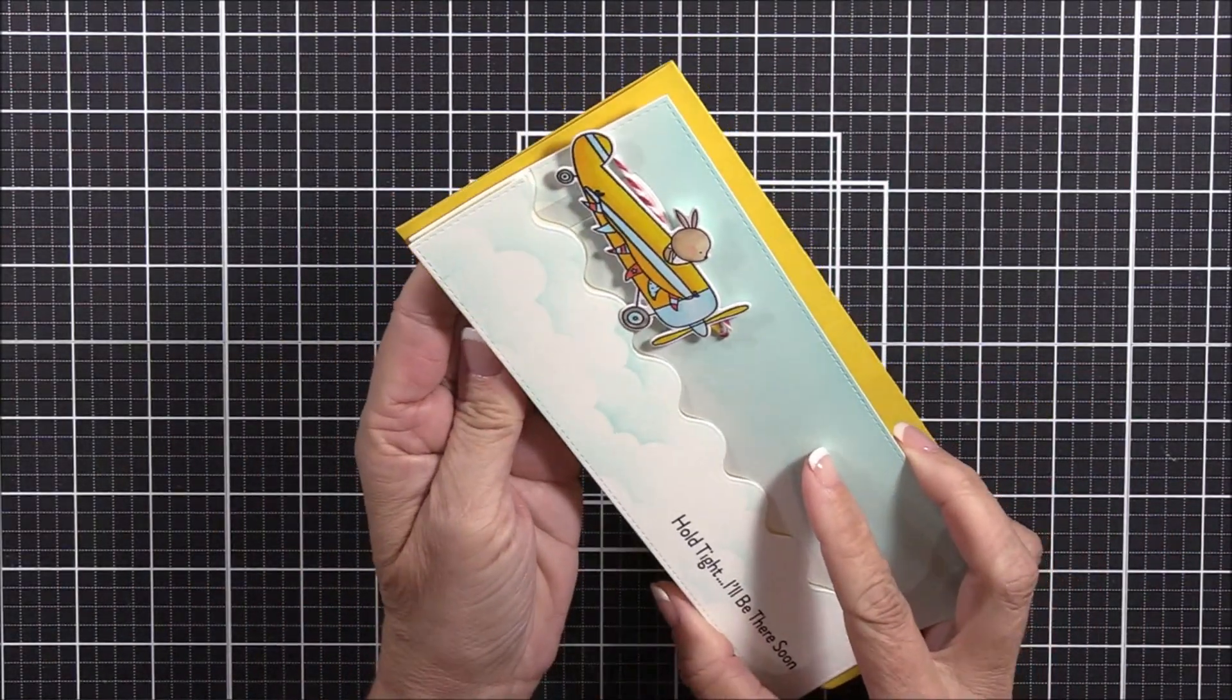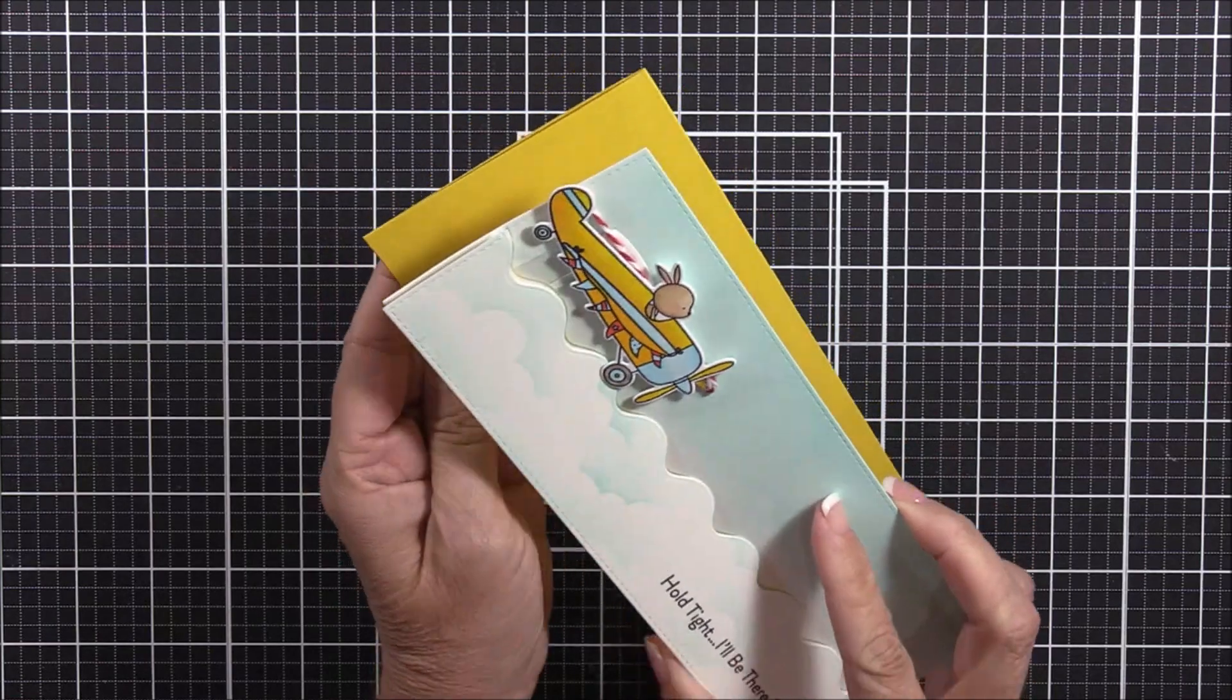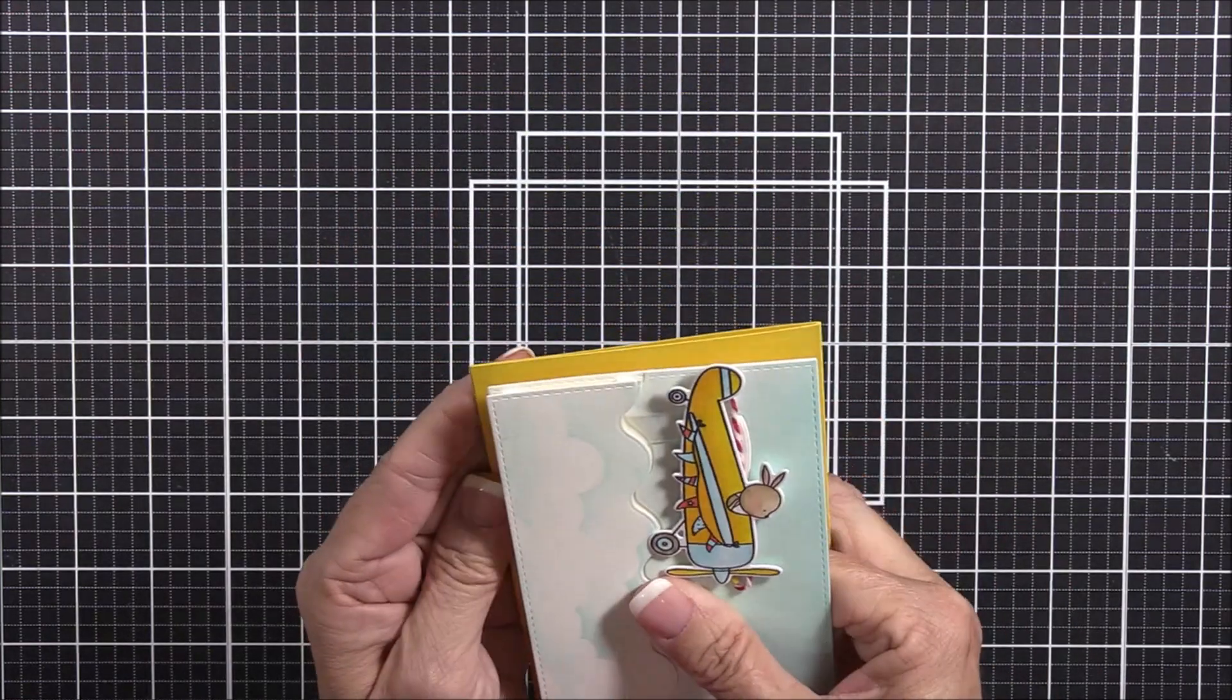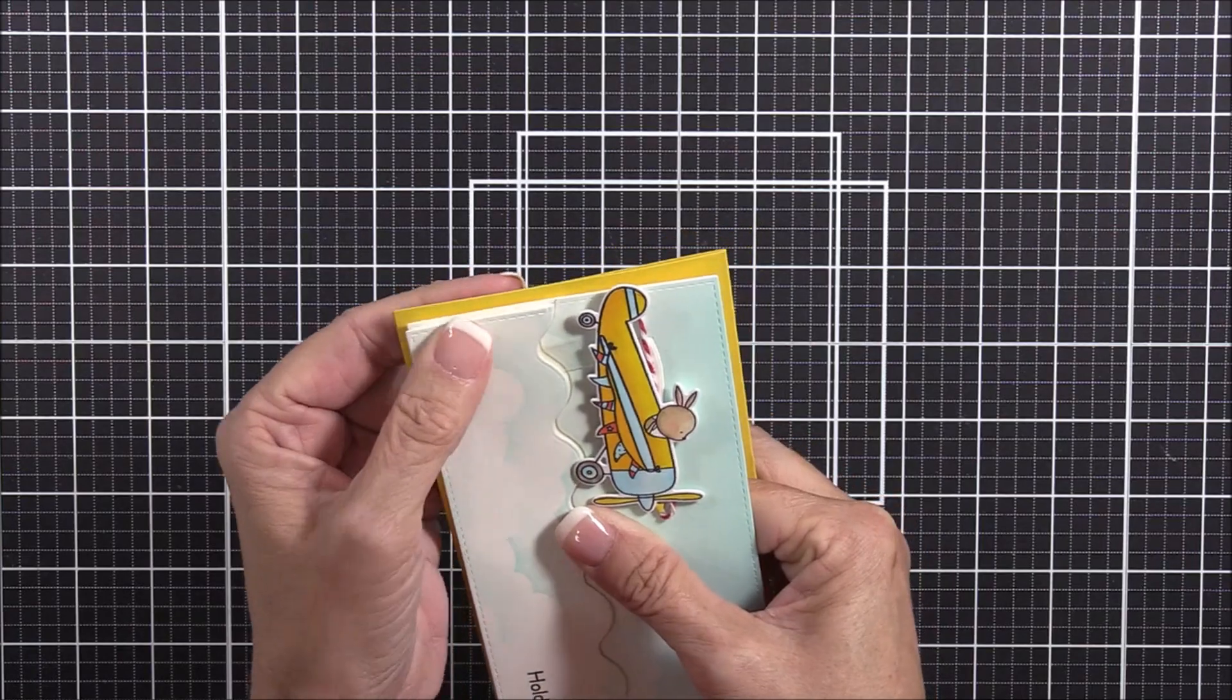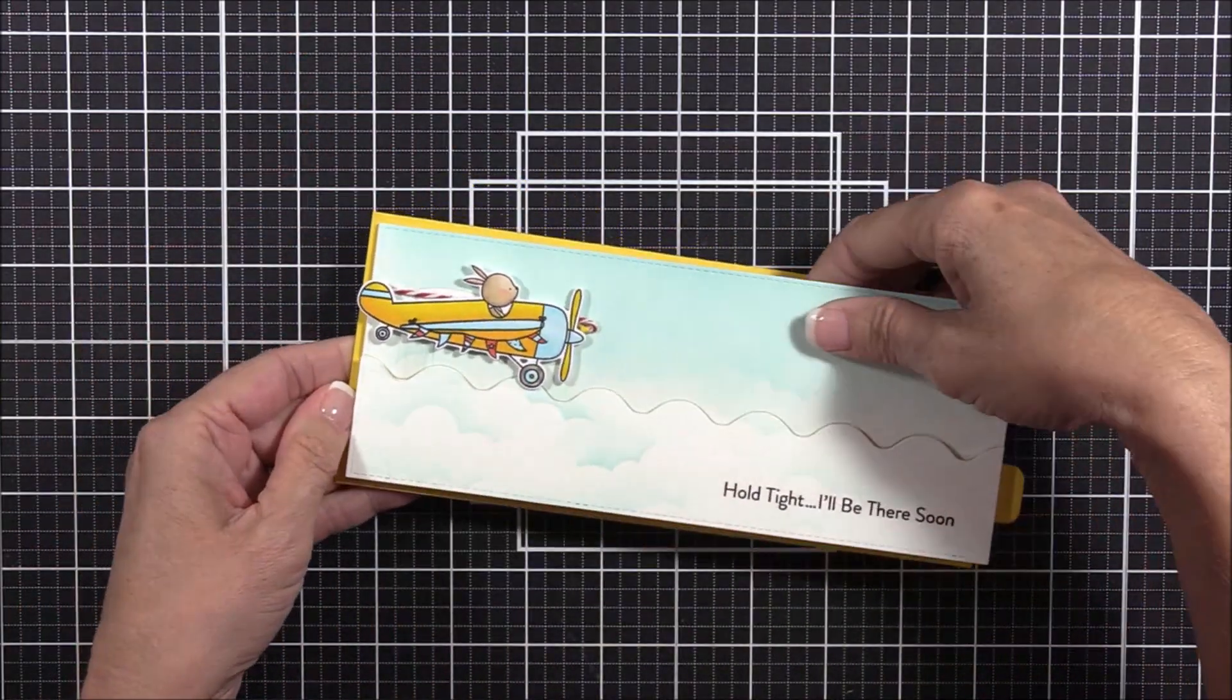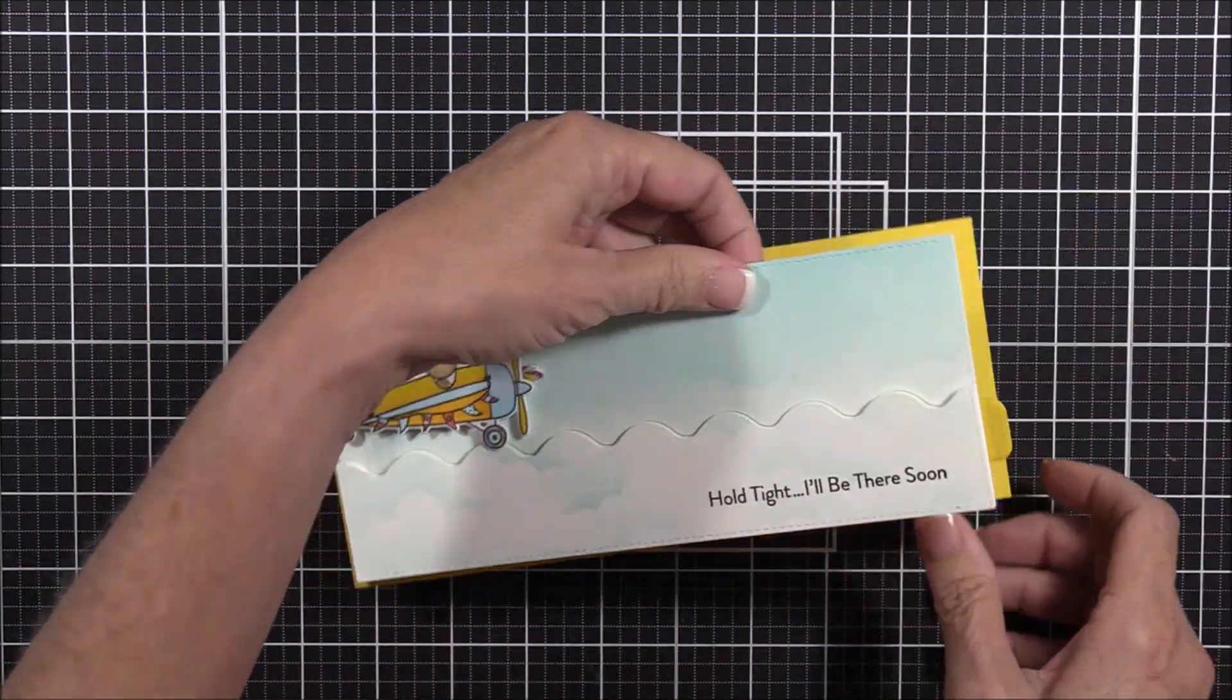I added a single layer of foam squares to the back of the assembled image panel, and I'm attaching that to a seven inch by eight and a half inch lemon drop card base that I've scored at three and a half inches on the seven inch side and folded in half.